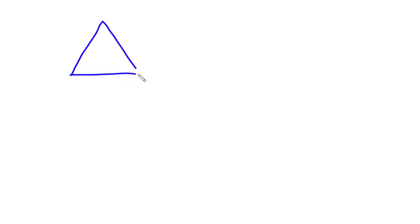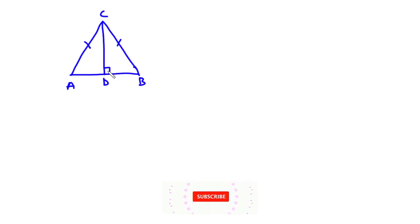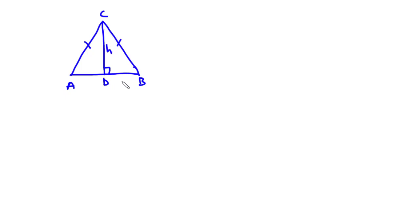Now let's move on to an isosceles triangle. An isosceles triangle is a triangle which has two of its sides equal. AB is the base of the triangle and CD is the height. CD bisects AB at right angles, and because this is an isosceles triangle, the base angles are equal. So angle CAD equals angle CBD.